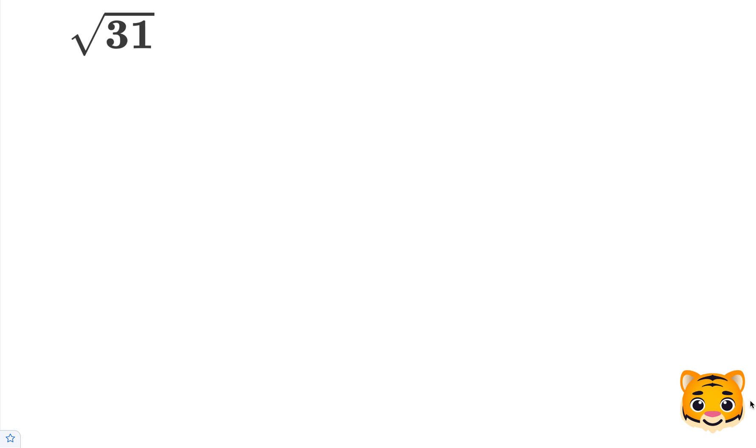In this example, we will be approximating the square root of 31. To do this, we want to look for perfect squares nearby to 31. Examples of this are 5 squared, which is 25, and 6 squared, which is 36.